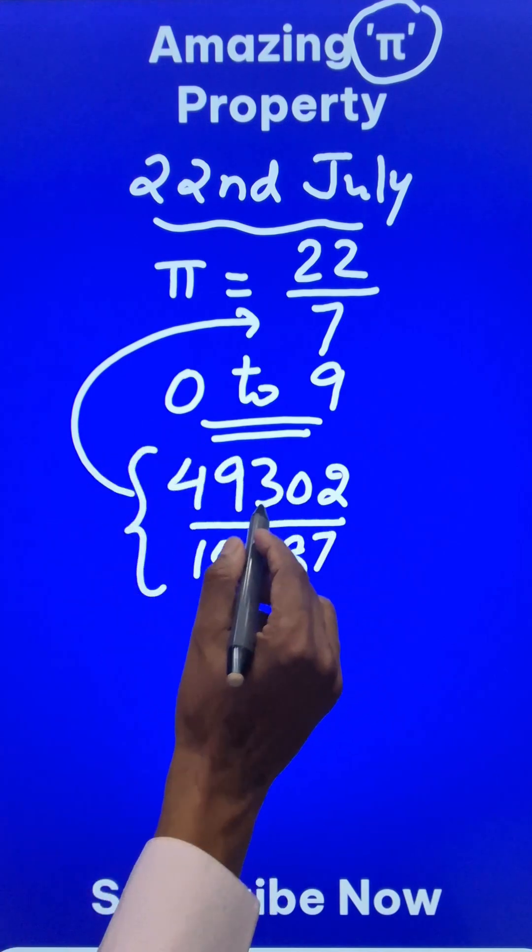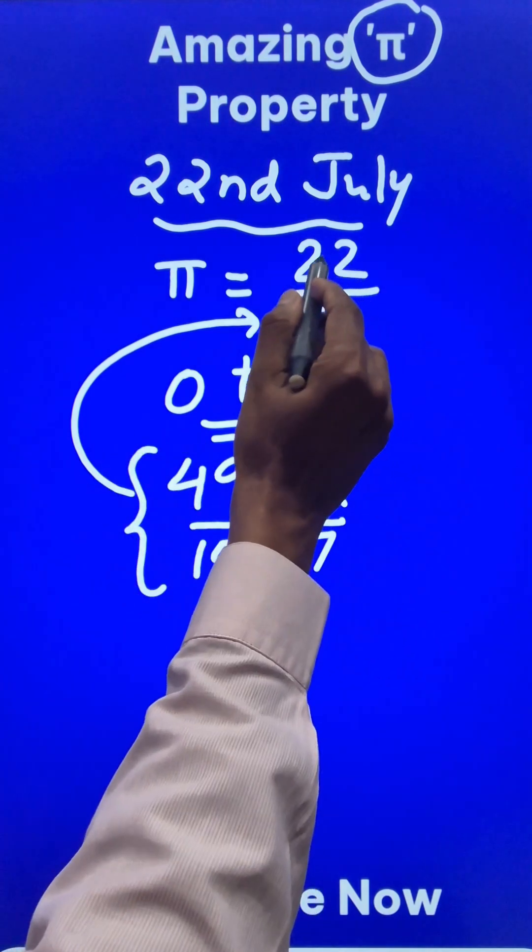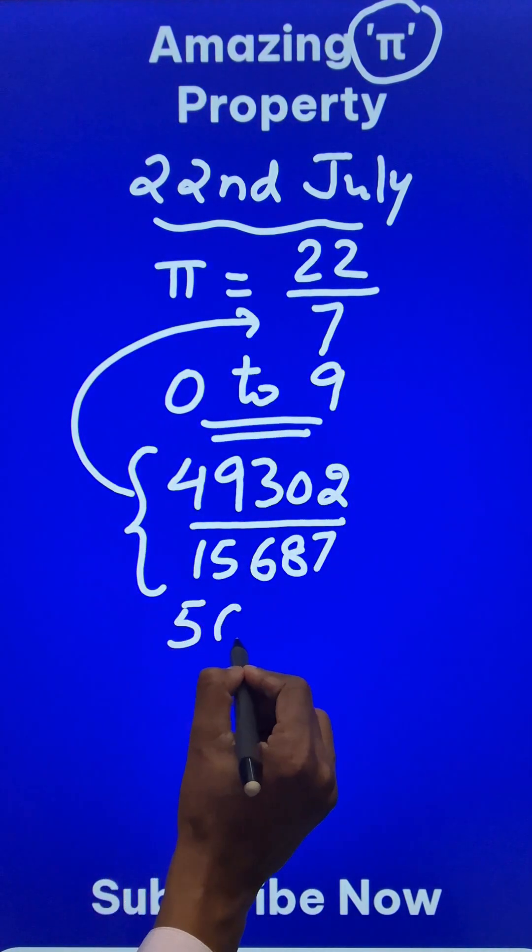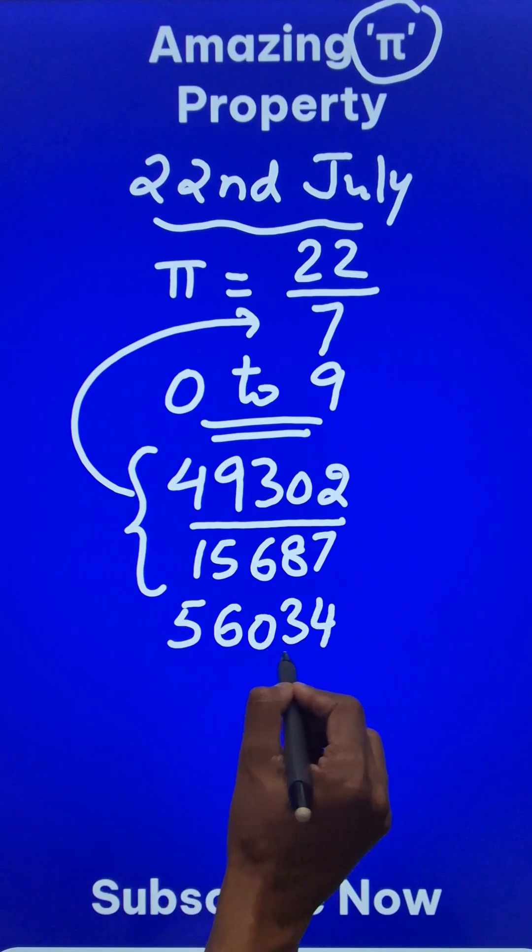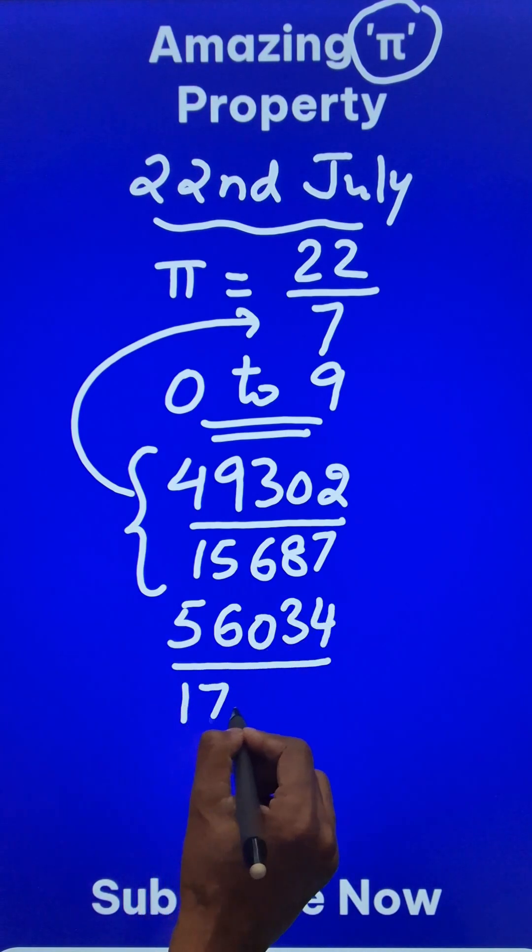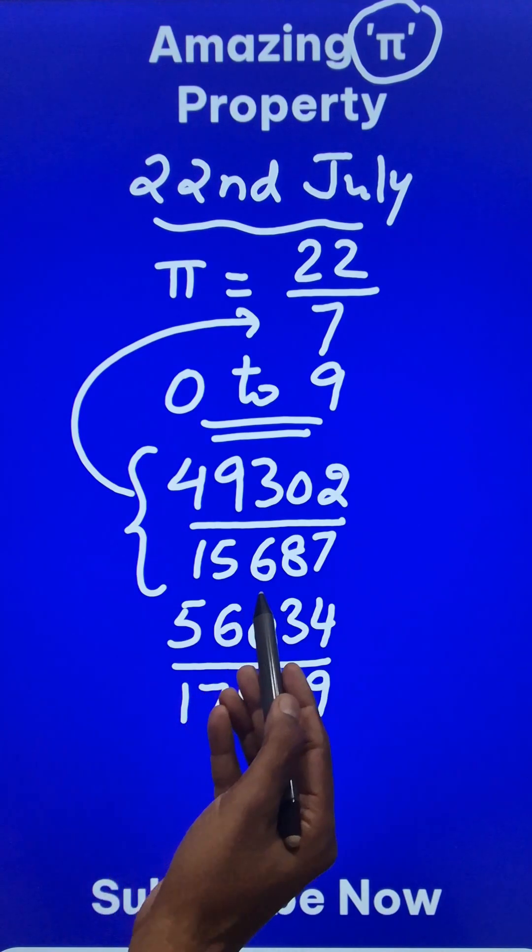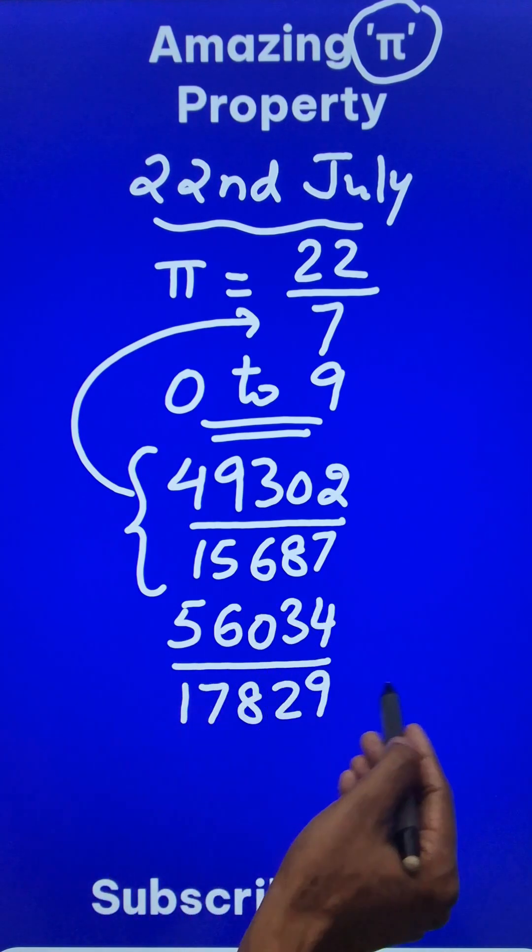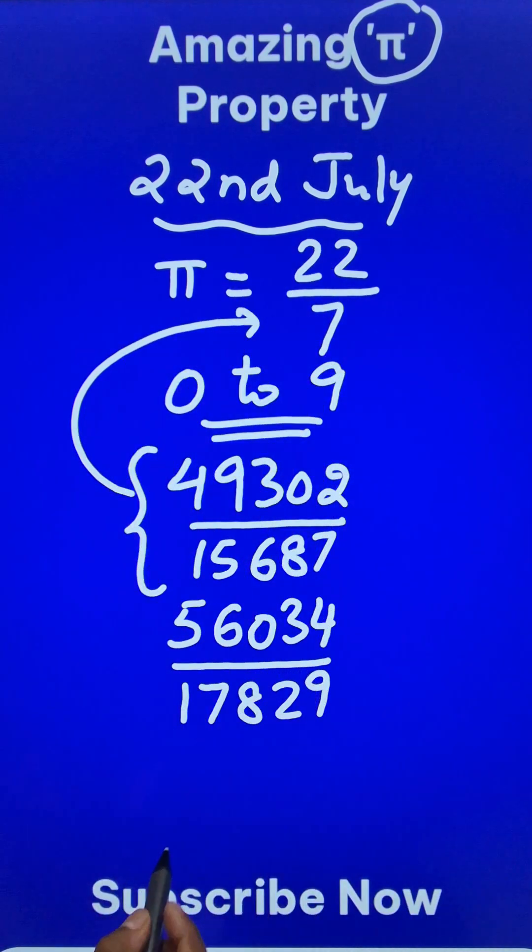Likewise, there are some more examples of fractions which reduce to 22 by 7 like 56034 in the numerator and 17829 in the denominator. Check this, find the GCD, cancel the common factor and reduce it. You will find that it is 22 by 7.